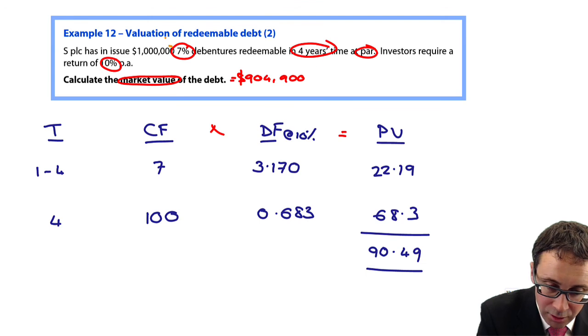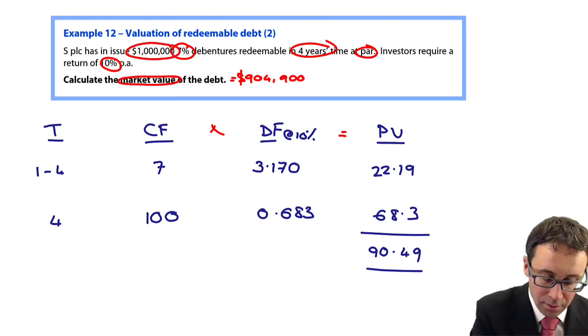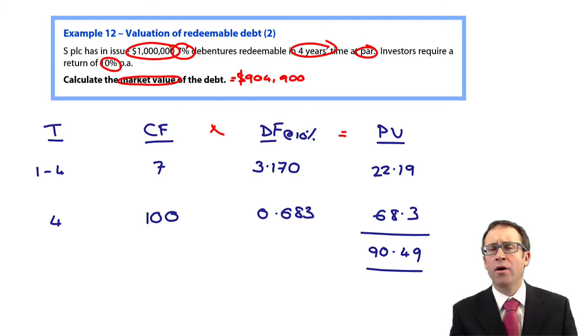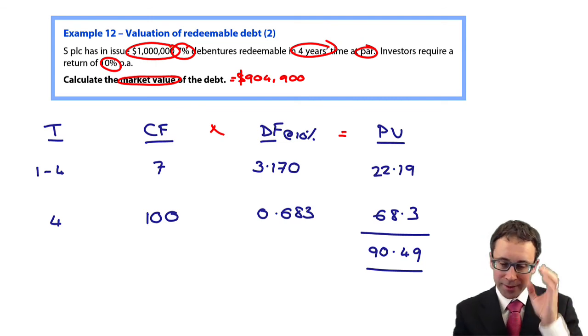Then multiplied by, there were a million dollars of debt in issue. Is there 904,900? There we go.